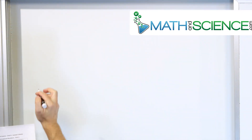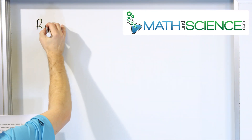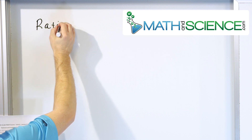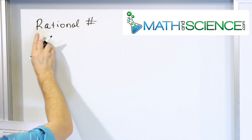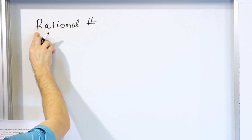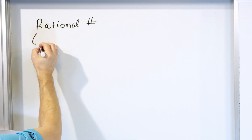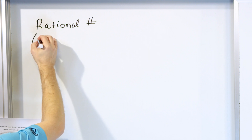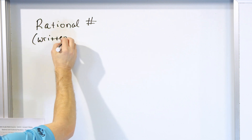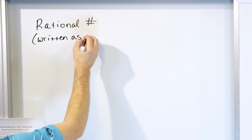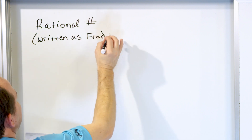So remember, rational number. It's spelled like this: rational number. Notice that the word 'ratio' is inside of the word. And so what a rational number is, is it can be written as a fraction, like this.